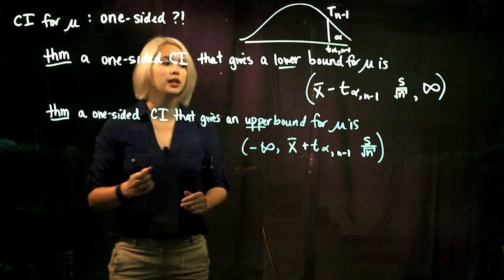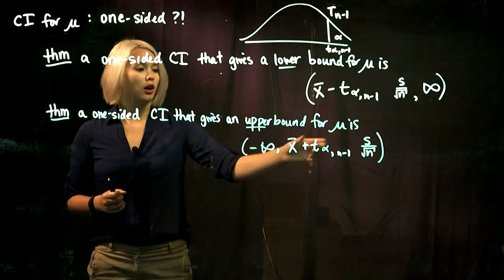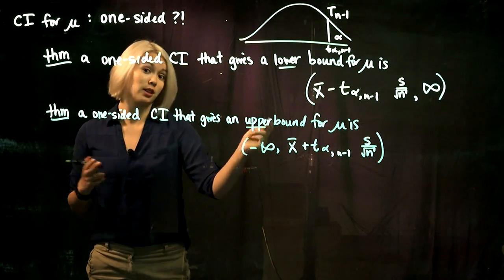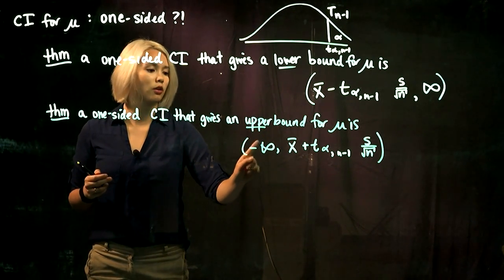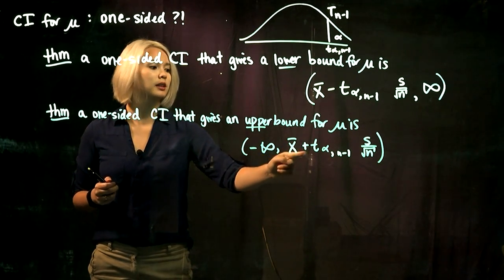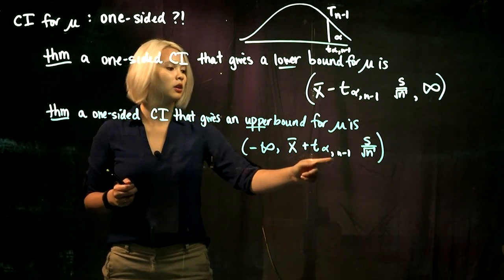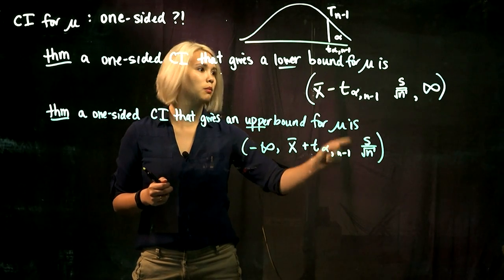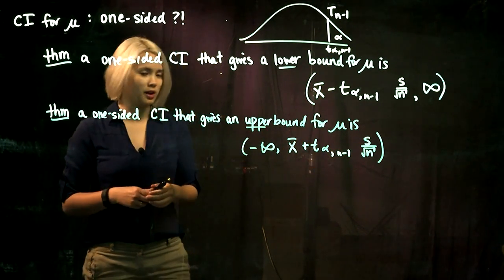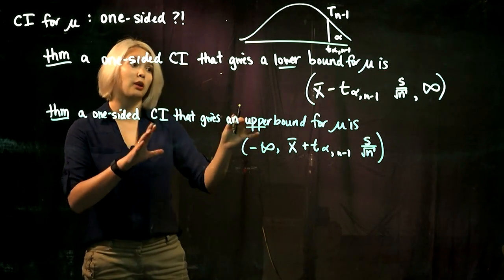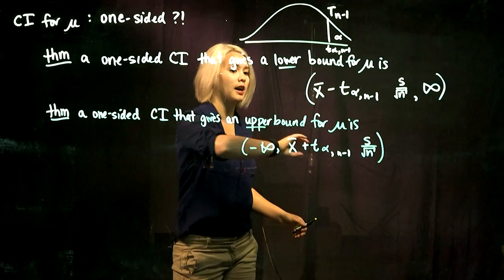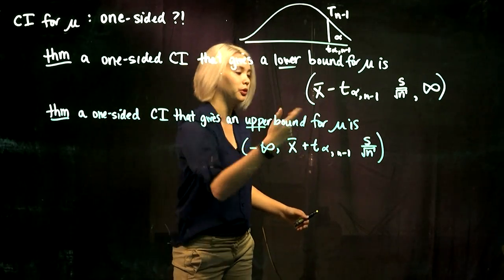Similarly, for our upper bound confidence interval, if we want a one-sided confidence interval that gives an upper bound for mu, the lower bound we don't care about, so it goes from negative infinity up to our sample mean plus t_alpha with n minus 1 degrees of freedom times s divided by root n. This is how we get a confidence interval that gives a lower bound for mu and one that gives an upper bound for mu.